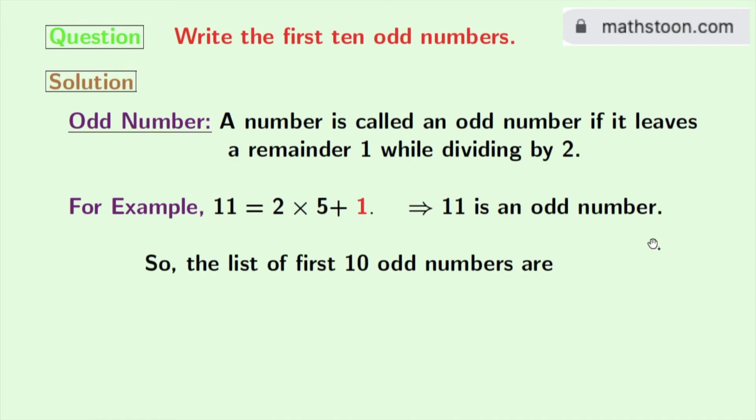So, we will provide the list of first 10 odd numbers now. These are 1, 3, 5, 7, 9, 11, 13, 15, 17 and 19.